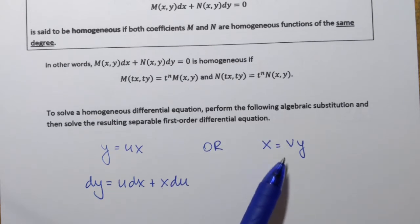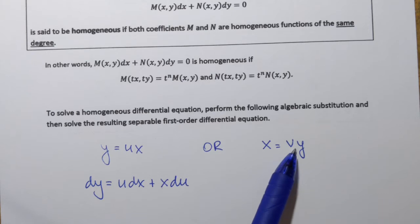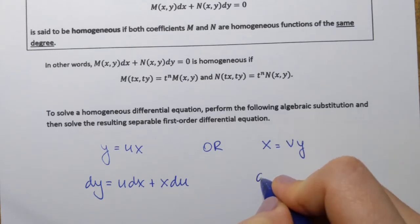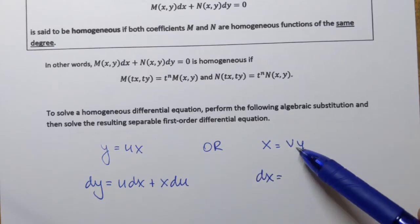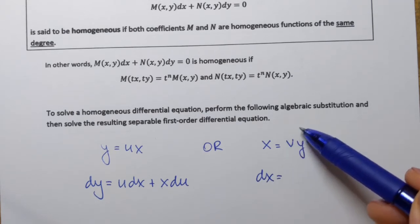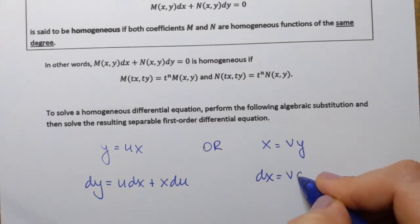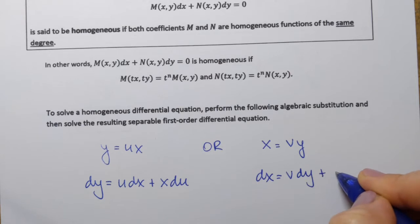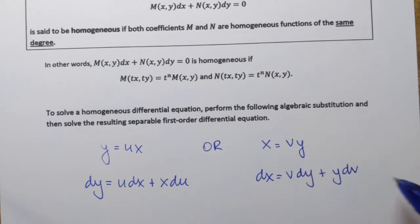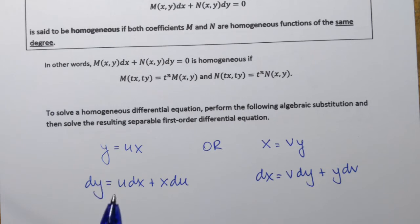If we decide to go with the second option and replace x with vy, then differential dx will have to be replaced with the following. Using the same idea, to obtain dx we find the derivative of the right-hand side, which is a product. So dx equals v dy plus y dv. And once we perform one of those two substitutions, the equation we obtain will be a separable differential equation, and we know how to solve those.